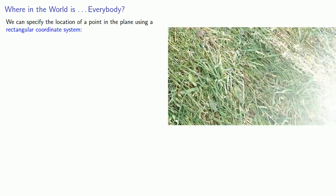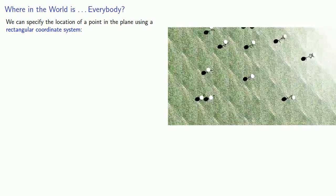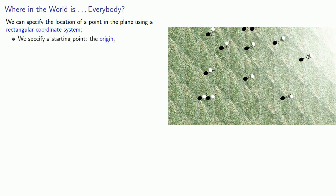And this is based around the following problem: where in the world is really everybody? We can specify the location of a point in the plane using a rectangular coordinate system. First, let's get a better vantage point. Since we're trying to specify the location of points in the plane, it might be better if we could look down on the plane. So let's take an aerial view. Now we need to specify a starting point, the origin. And since I'm the most important person in the universe, we'll make the origin at my location.